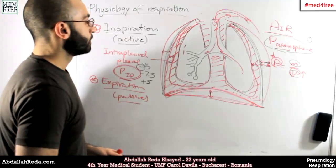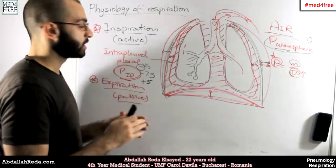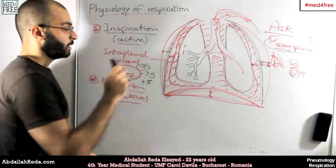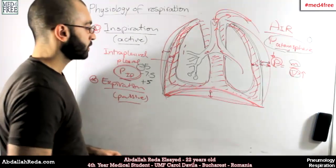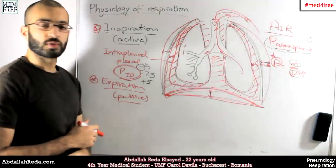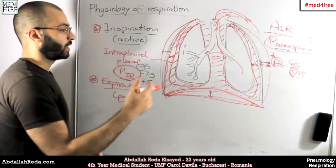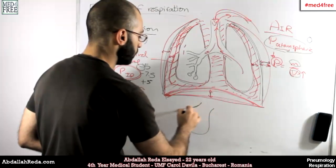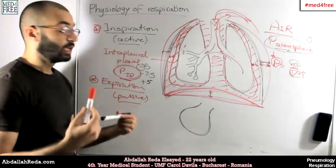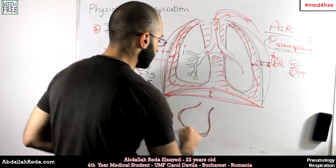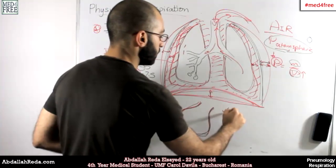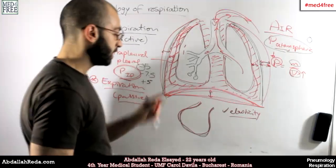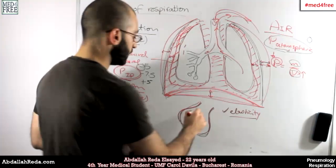Now the last thing we need to know is: throughout this process of changes in pressures, how does the alveoli manage to stay open? The pressure in the lungs will increase and decrease — how do the airways manage to stay open as well? Starting from the alveoli: we need to know that the alveoli have a very important factor which is elasticity in their walls — they have elastic structures. So the first thing is elasticity, and the elasticity of the walls keeps them open. But that's not enough. A very important factor is called surfactant.